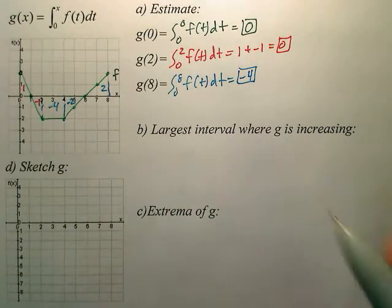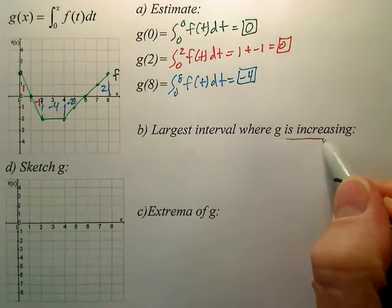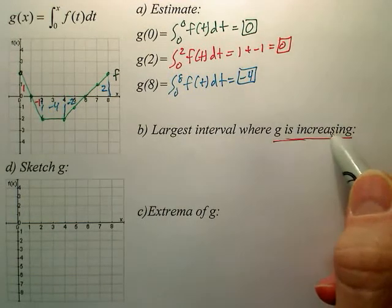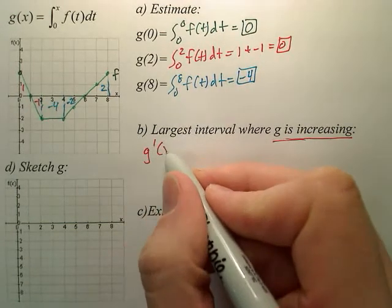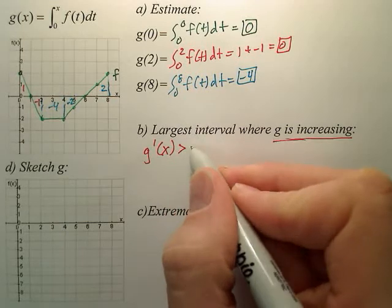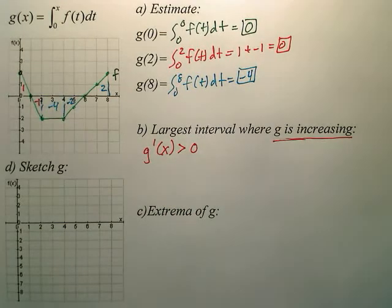The next part is, find where g is increasing. The word increasing means derivative positive. So basically that's saying, when is g prime of x positive, which means greater than 0? So I want to find out, where is g prime greater than 0?